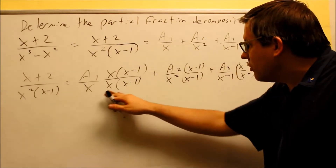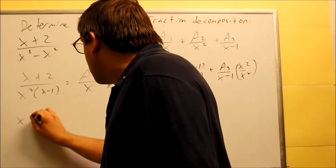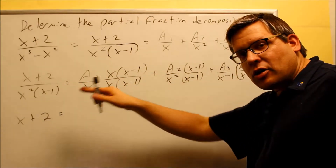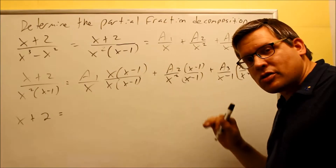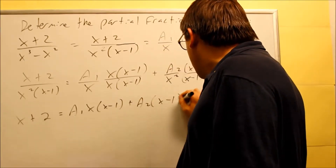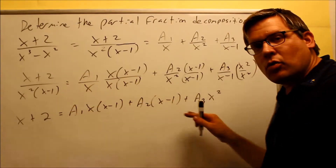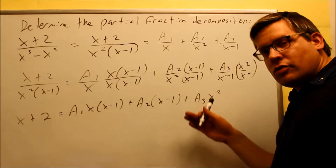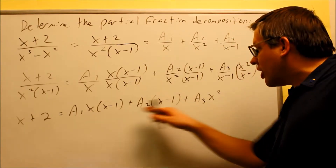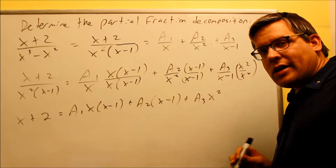Now that I have that, I'm ready to write out the main equation. Looking at the numerators only — since the denominators are all the same — x minus 2 equals a1 times x times x minus 1, plus a2 times x minus 1, plus a3 times x squared. This is the main equation I'll be working with. I can solve this by convenient values or by equating coefficients. Because I have three variables, I'm going to use convenient values.